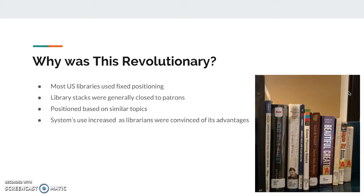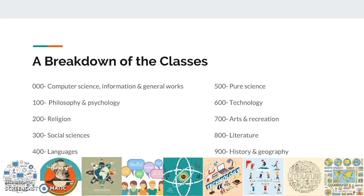A breakdown of the classes: The Dewey Decimal System ranges from 000 to the 900s. Books in the 000 category are about computer science, information, and general works. Philosophy and psychology texts are in the 100s. Books about religion can be found in the 200s, and books on social sciences are located in the 300s. The 400s are language books. Books on pure science, such as chemistry and physics, are in the 500s. Technology books are in the 600s. Arts and recreation books are in the 700s, and literature books are in the 800s. The system ends in the 900s with history and geography books.